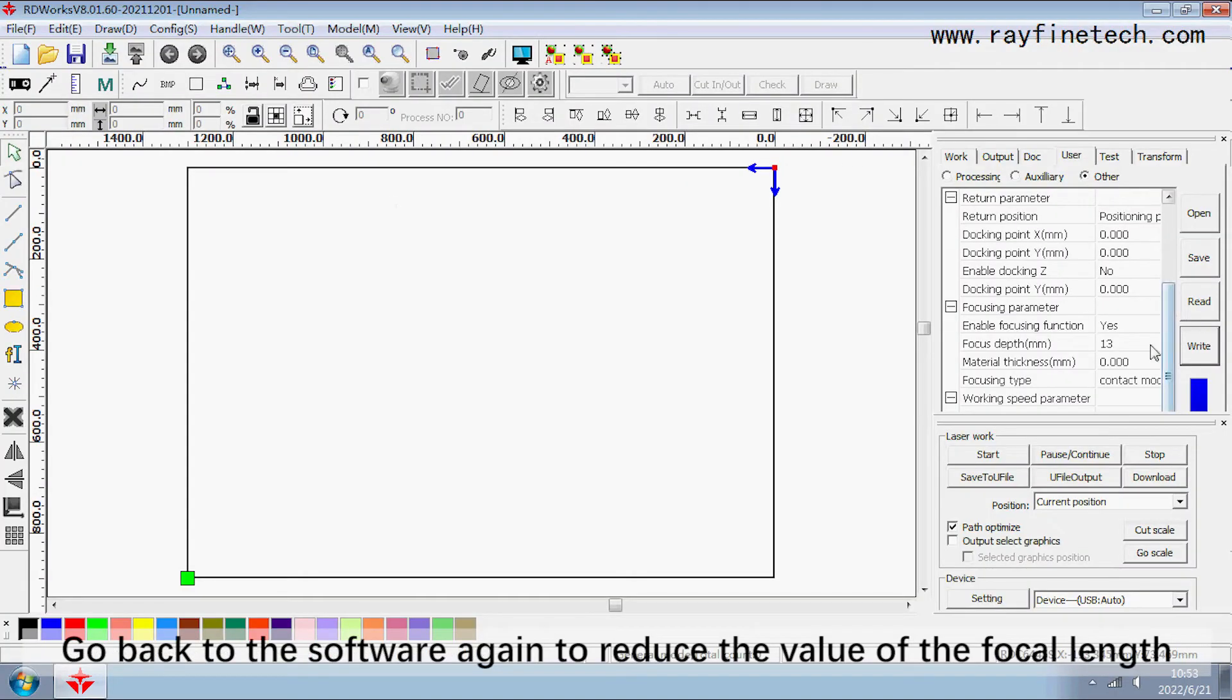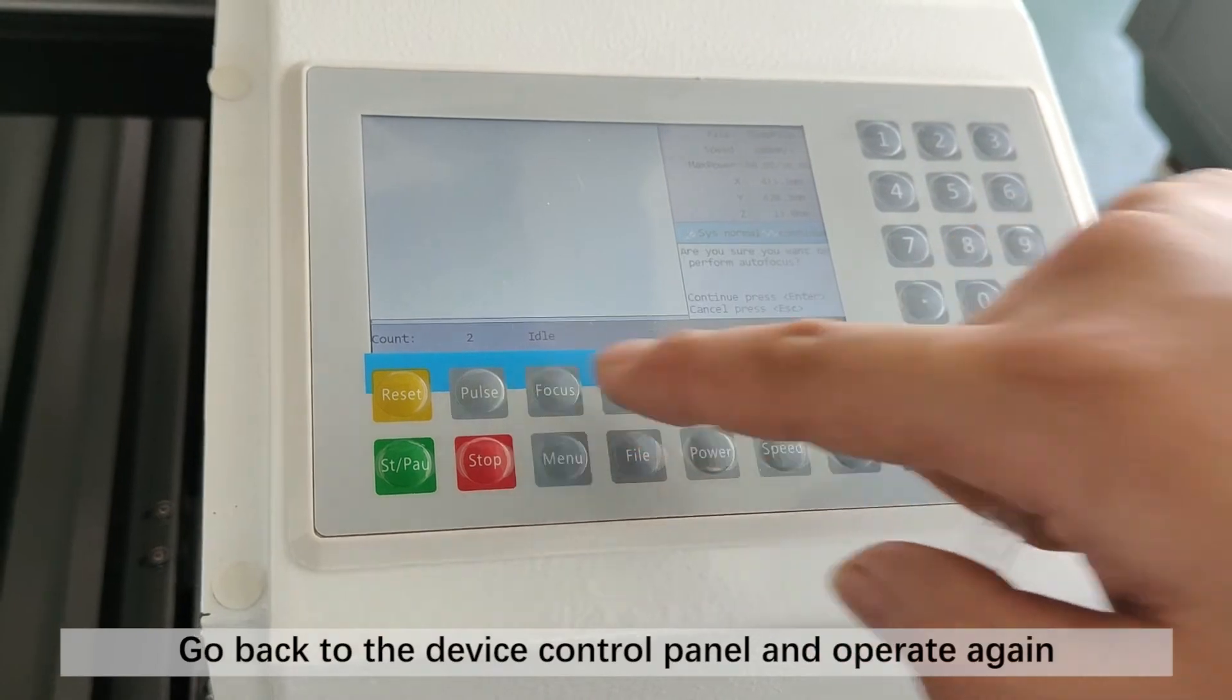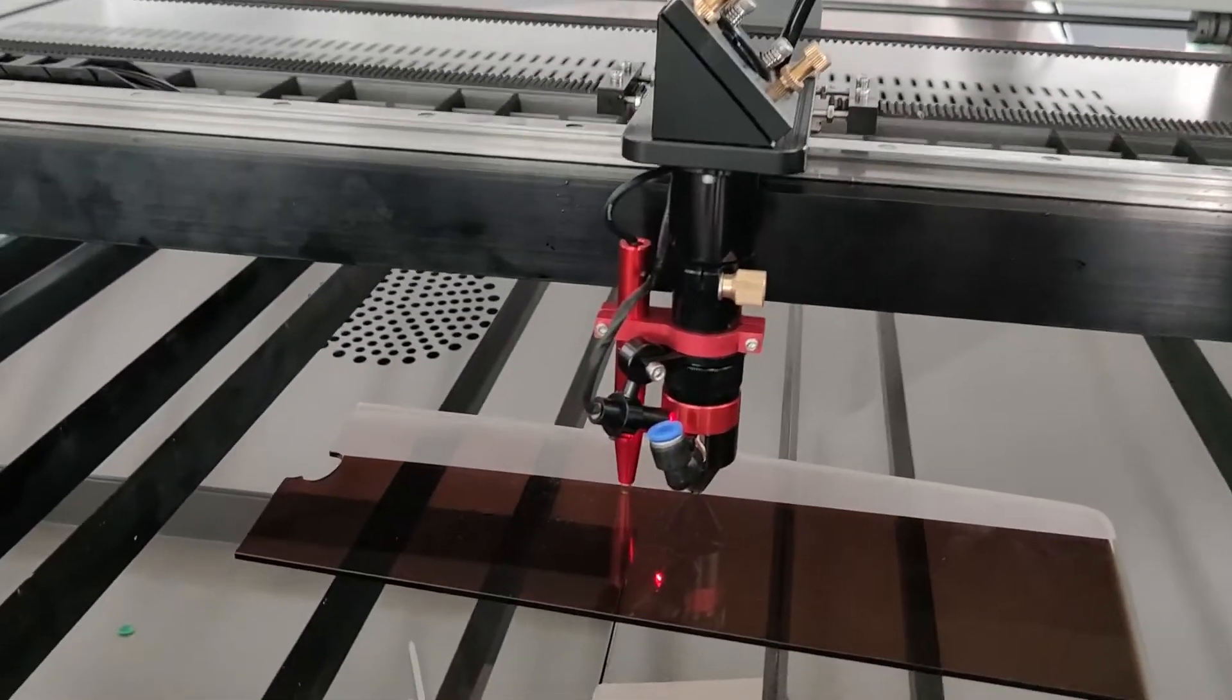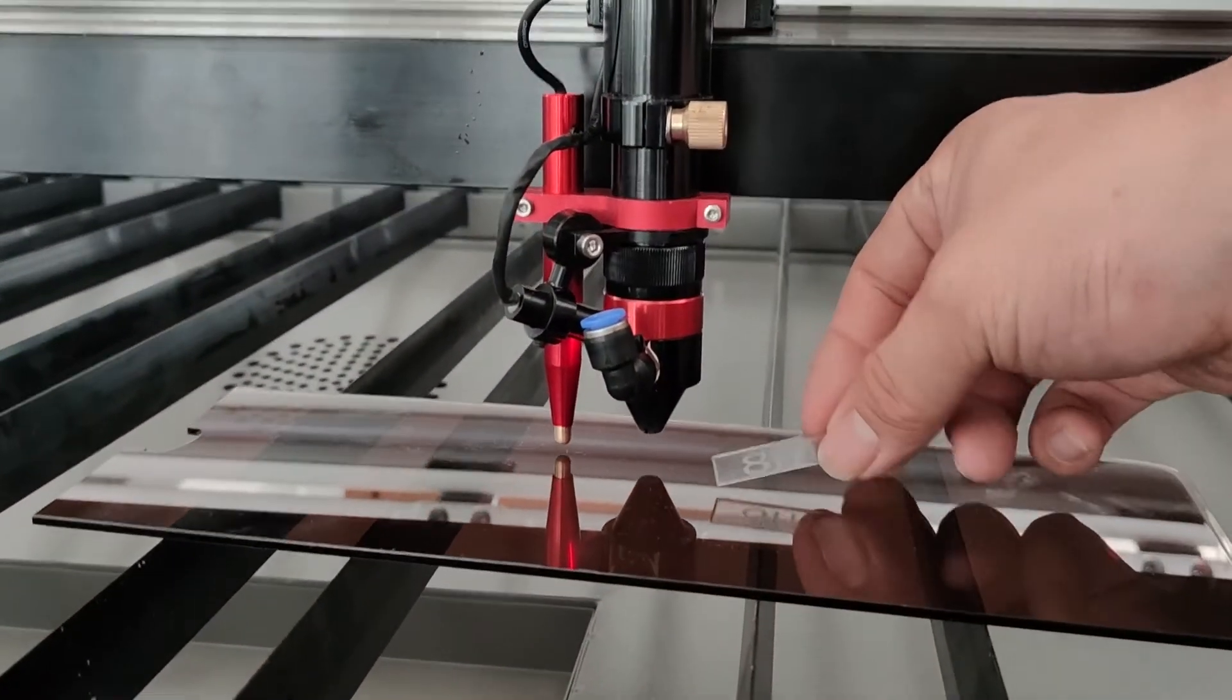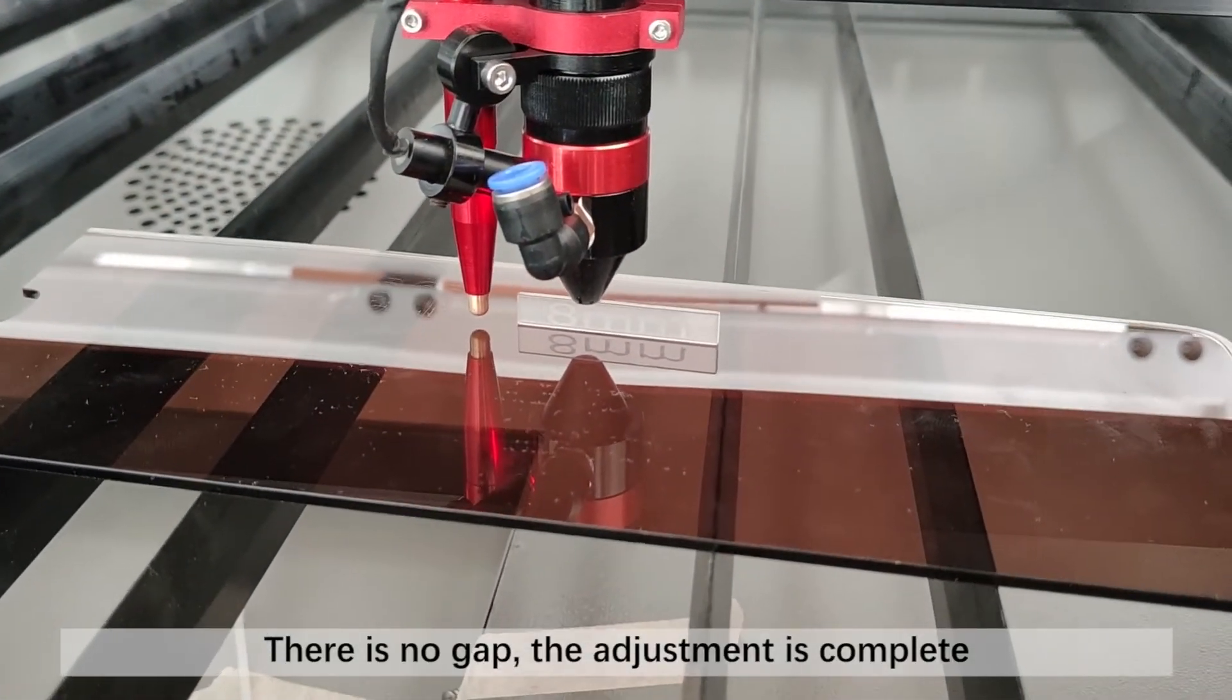Go back to the software again to reduce the value of the focal length. Go back to the device control panel and operate again. There is no gap. The adjustment is complete.